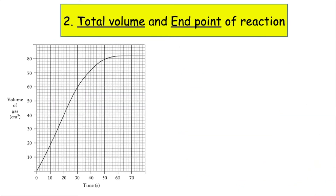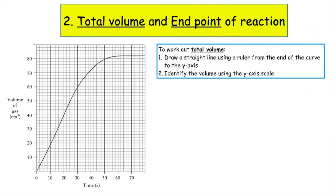The next thing past papers might ask is to work out the total volume of gas produced and to identify the end point of the reaction. To work out the total volume, draw a straight line using your ruler from the end of the curve plotted on the graph to the y-axis. Identify the volume using the y-axis scale. Between the numbers given there are 5 boxes with a difference of 10, so each box is worth 2 centimetres cubed. The total volume of gas produced in this reaction is 82 centimetres cubed.